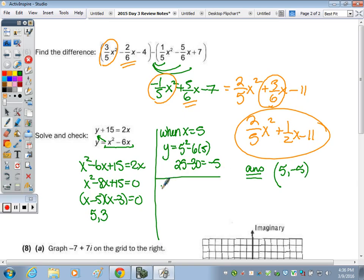And then when x equals 3, y is equal to 3 squared minus 6 times 3. So 9 minus 18 is negative 9. So the answer is 5, negative 5, and 3, negative 9.